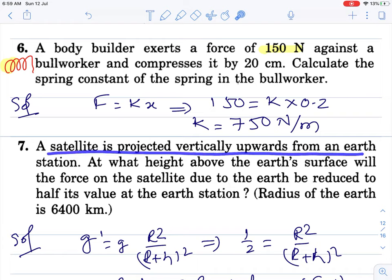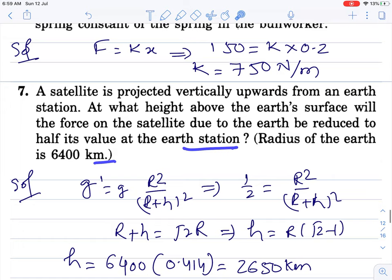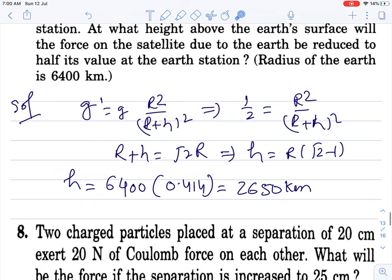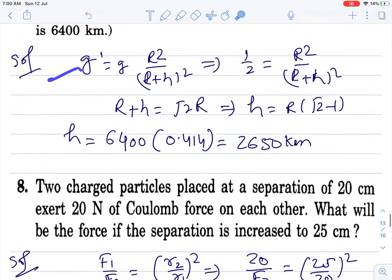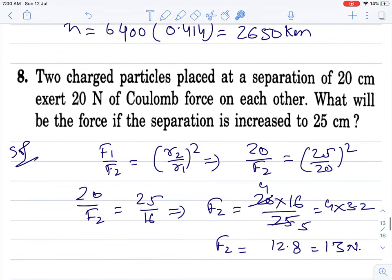Question number 7. Satellite is projected vertically upward from earth station. At what height above earth surface will the force on the satellite due to earth be reduced to half its value at the earth station? Radius given. At height, acceleration changes by this formula. G surface per, half surface ka. G cancels. Solve, cross multiply, root 2 minus 1 is 0.414, R ki value given, put kar do. At this height, acceleration due to gravity will be half of what is on the surface. This is a gravitation question, you will be doing it again. If you don't follow now, don't worry, gravitation mein phir se repeat hoga.